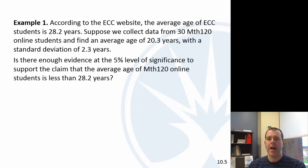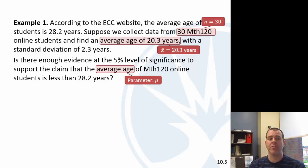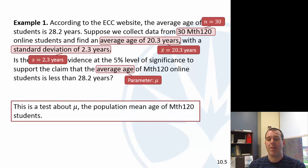Here are three examples. According to the ECC website, the average age is about 28.2 years for ECC students. Suppose we collect data and find a sample average of 20.3 with a standard deviation of 2.3. Is there enough evidence to support the claim that the average age of Math 120 online students is less than 28.2? We're looking at average age, so the parameter is the mean. We have a sample size of 30, sample mean of 20.3, sample standard deviation of 2.3 — this is a test about mu, the population mean age of Math 120 online students.